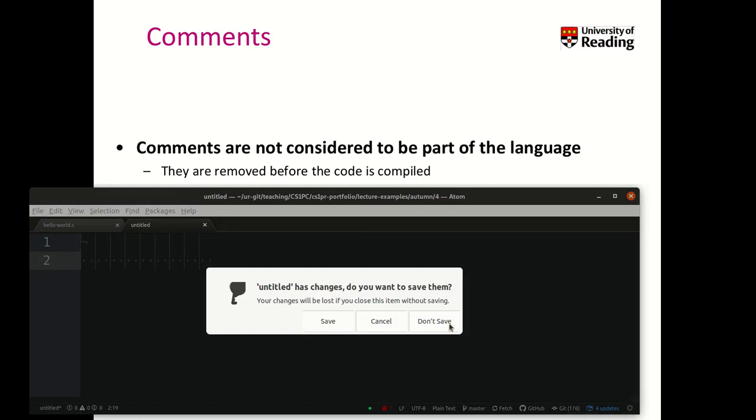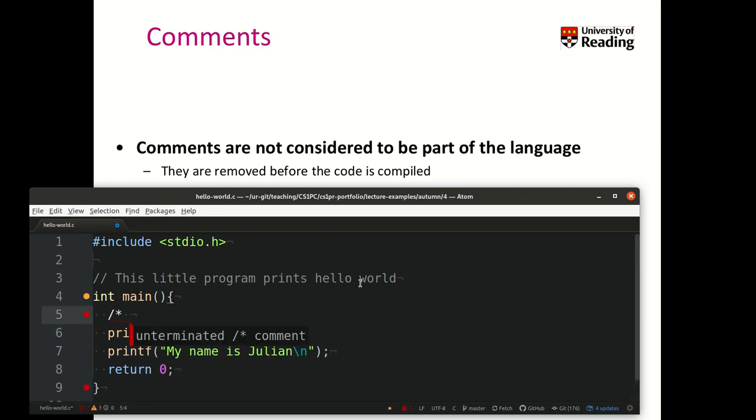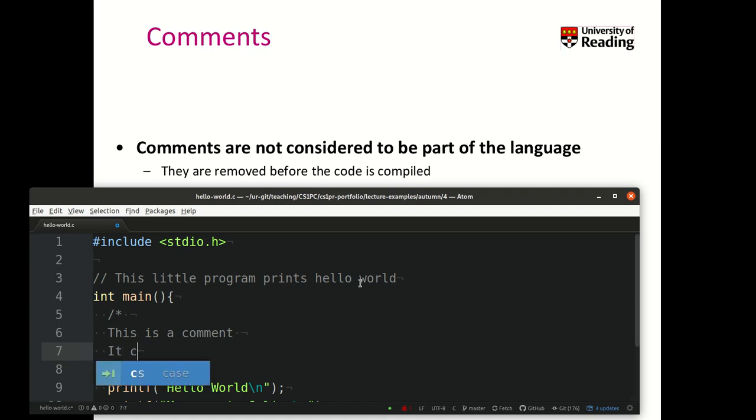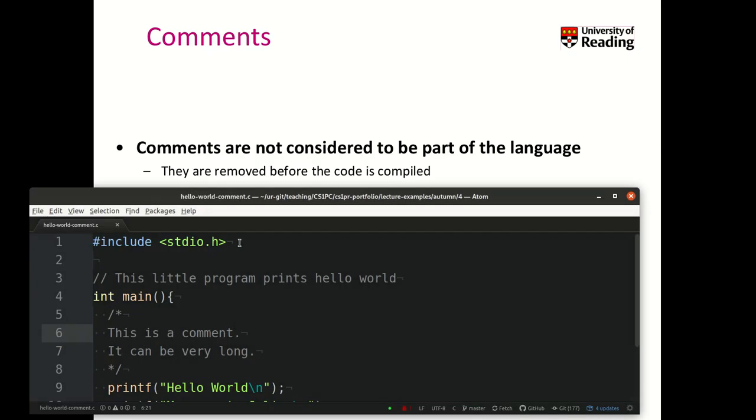Let's have a look again at our example, hello world program. At the moment, there is no comment. I can, for example, add here a comment and say, this little program prints hello world. Okay? So two slashes makes this, everything I type here, to be a comment until the end of the line. I can also use star slash star and star slash to encapsulate a block comment. So this is a comment. And it can go over multiple lines. Now, it can be very long. Let me save this program as hello world comments that you will find it later in our repository.